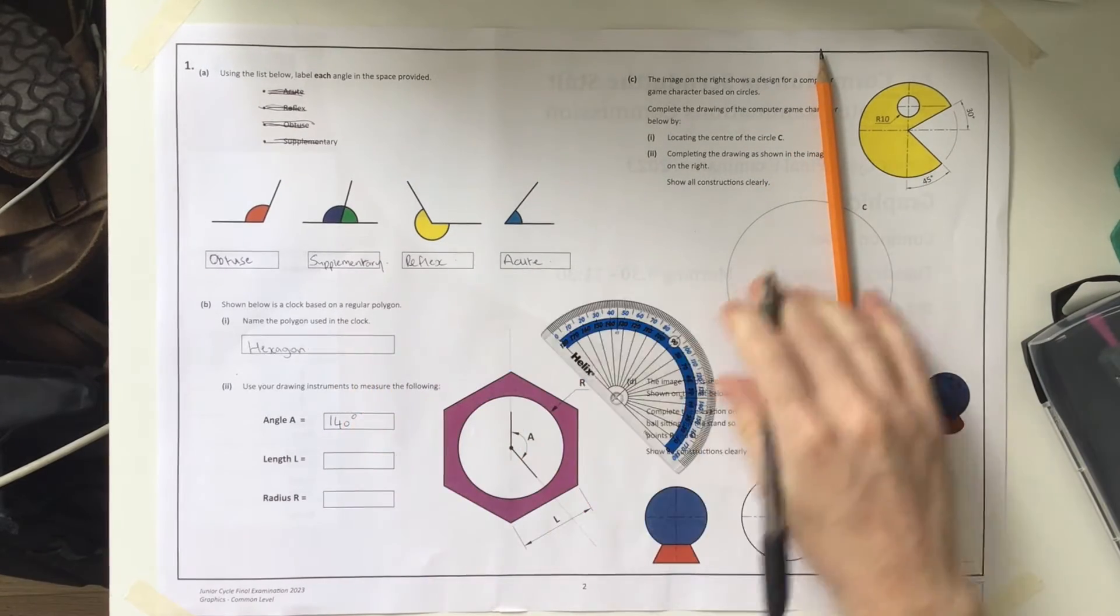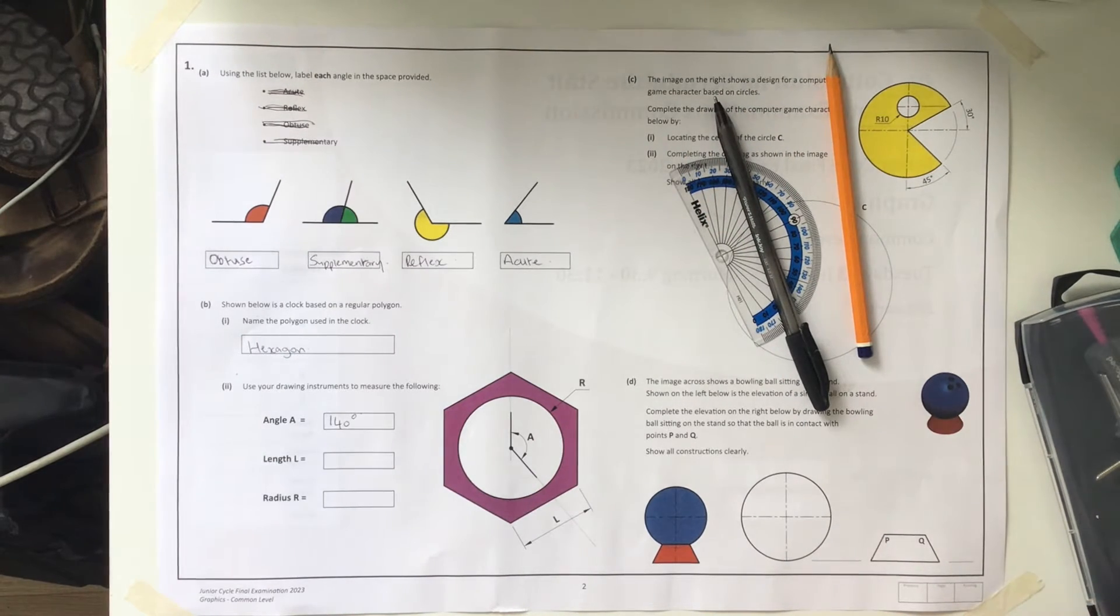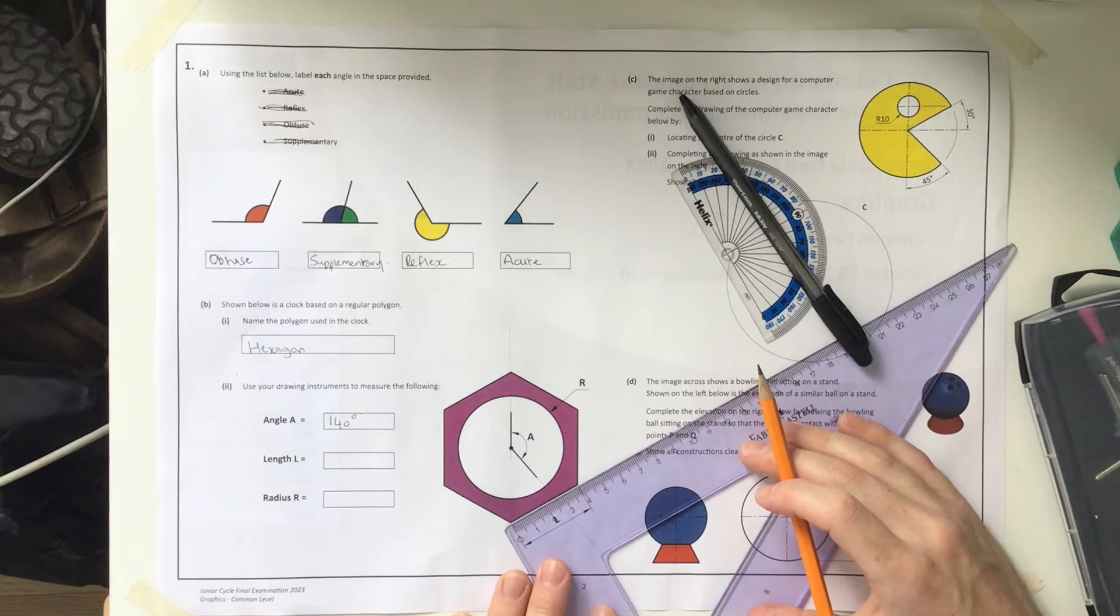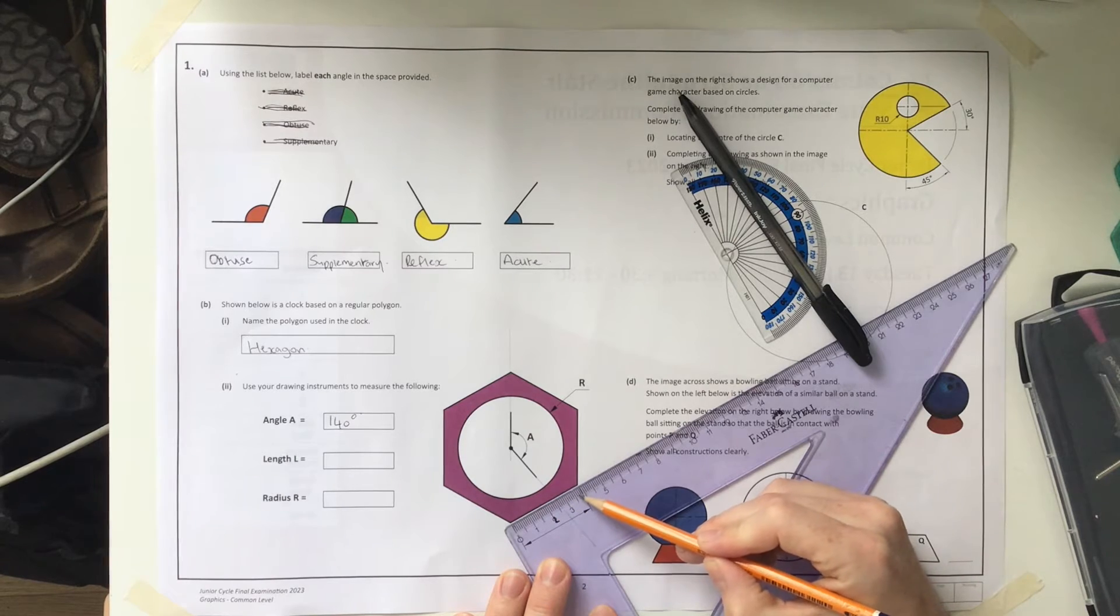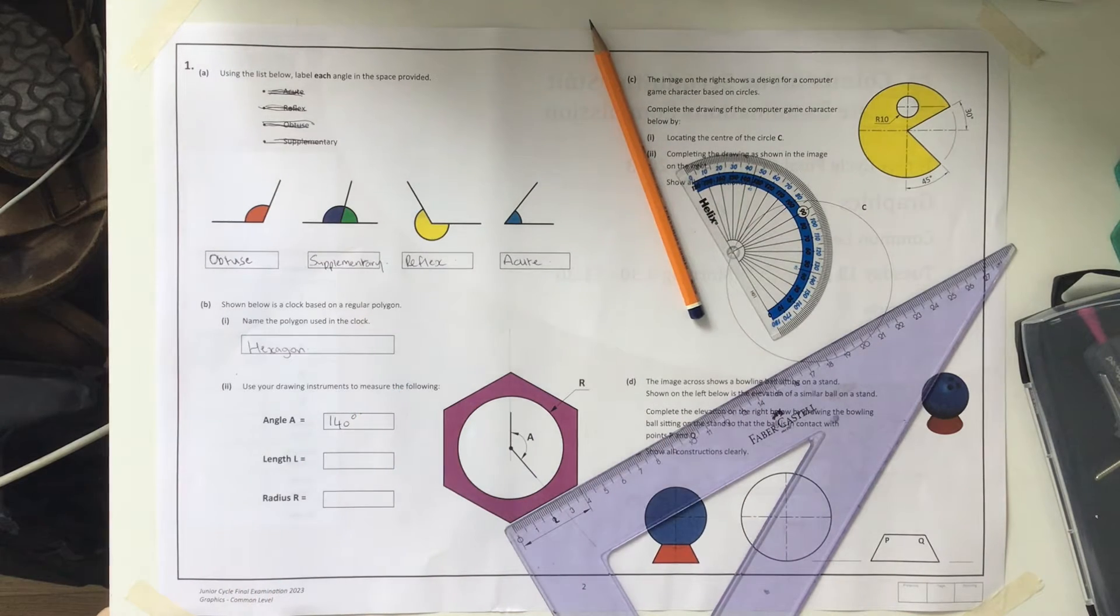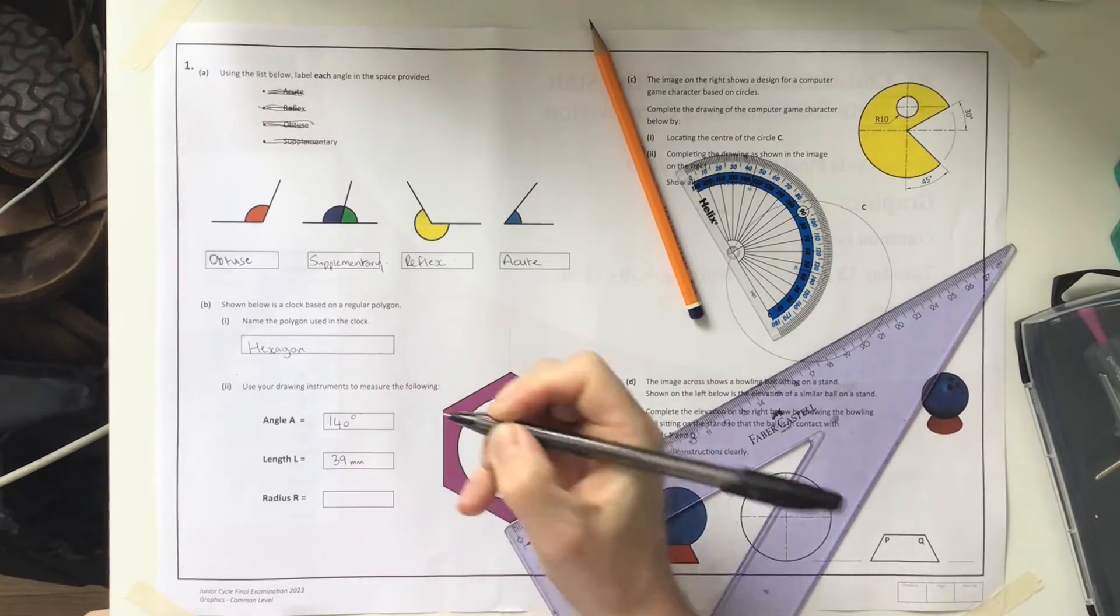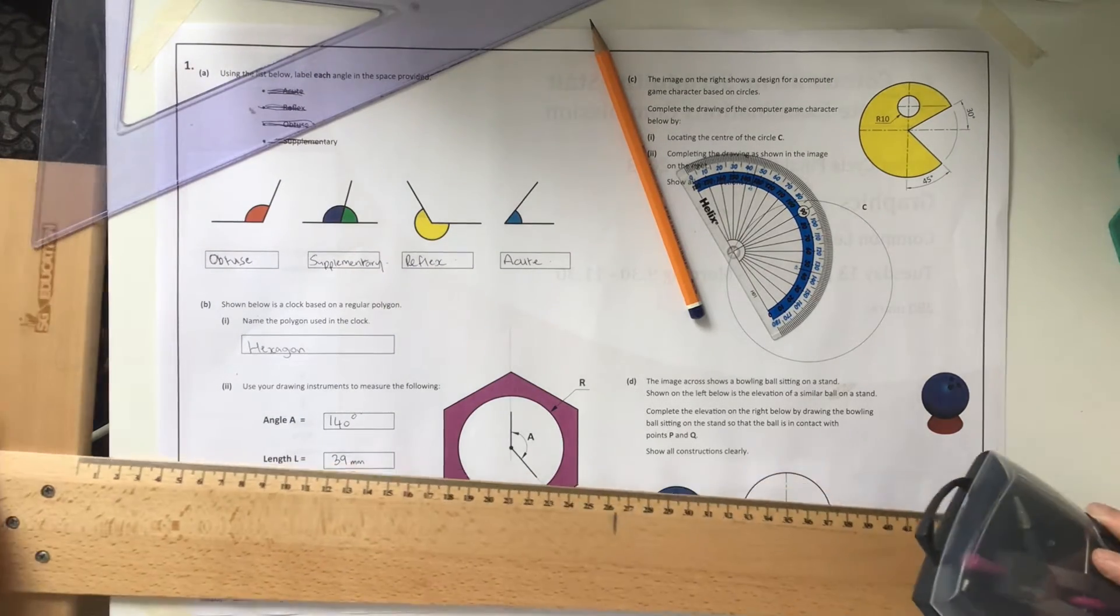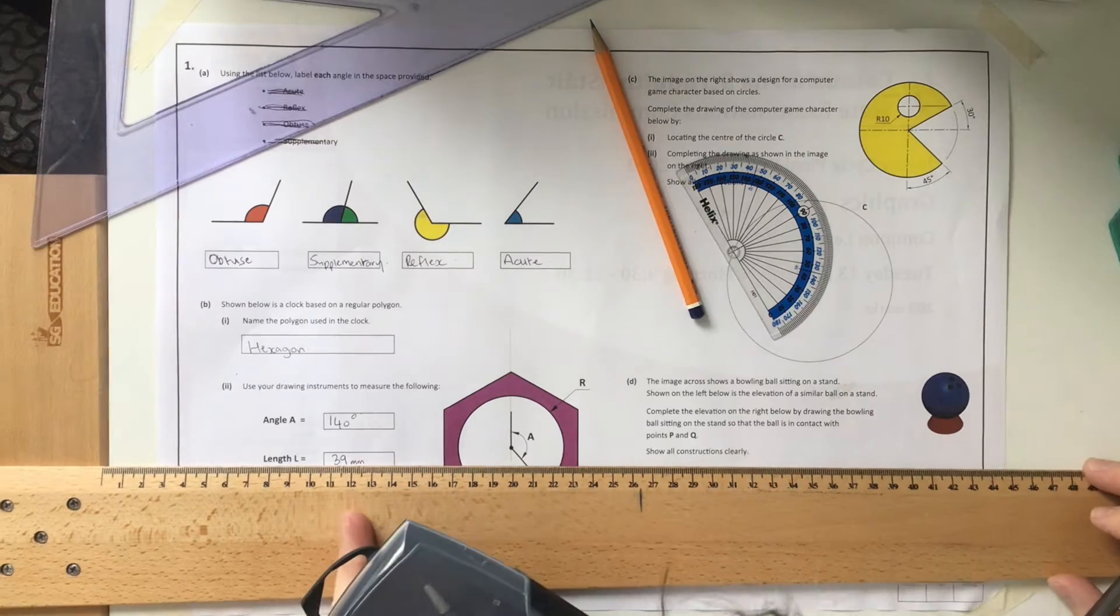For length L, I'm grabbing my set square and measuring. I have it as 39 millimeters. Make sure you're using the proper symbol when writing millimeters, same as you do with degrees.